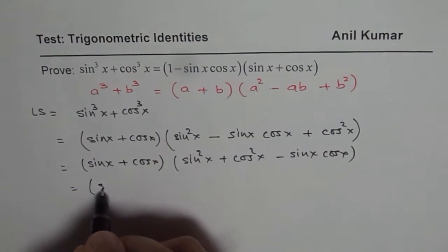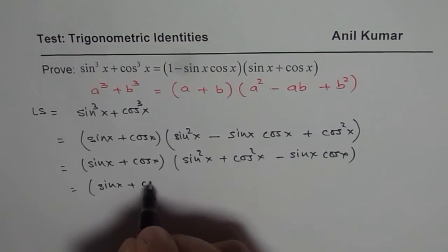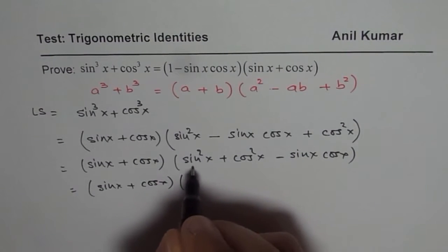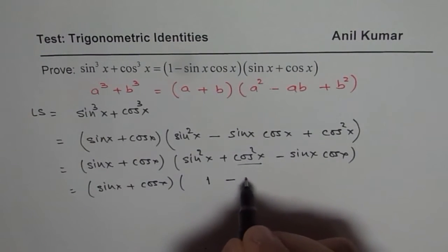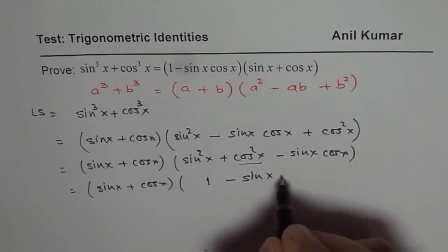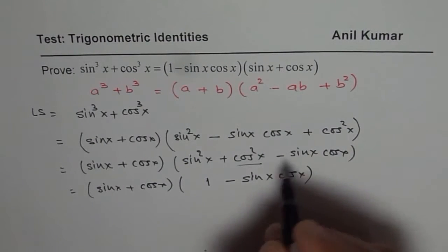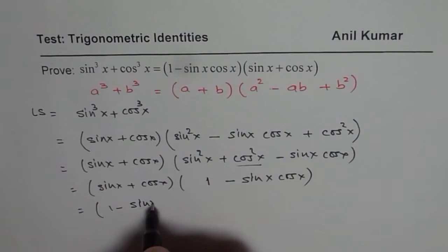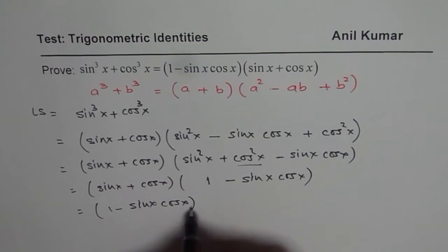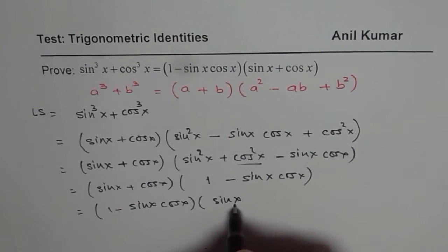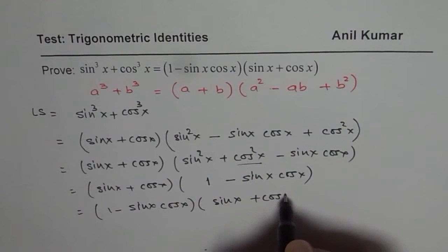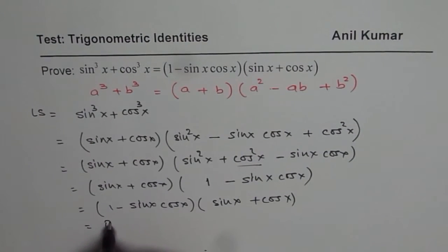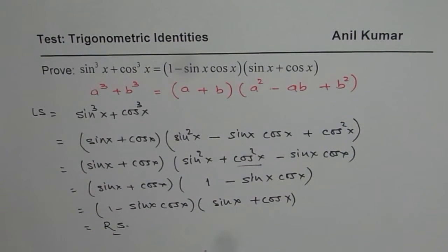So now we get sin x + cos x. This is equal to 1, so we get 1 - sin x cos x, which could be rearranged as (1 - sin x cos x)(sin x + cos x), right? And that is equal to the right side. So we have proven the identity.